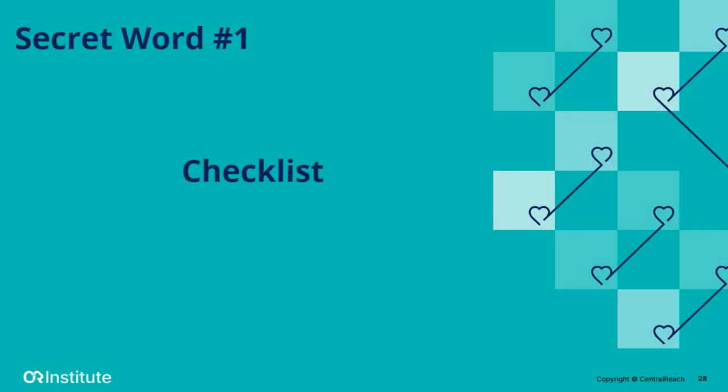Secret word number one for CEU seekers: the word is 'checklist' — C-H-E-C-K-L-I-S-T.